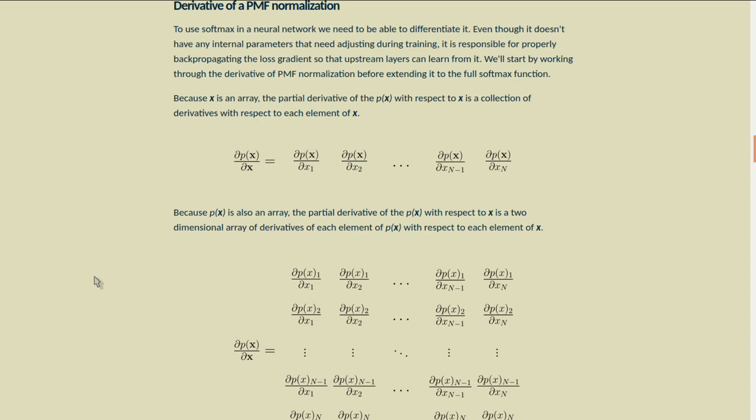To use softmax in a neural network, we need to be able to differentiate it. Even though it doesn't have any internal parameters that need adjusting during training, it's responsible for properly backpropagating the loss gradient so that upstream layers can learn from it.